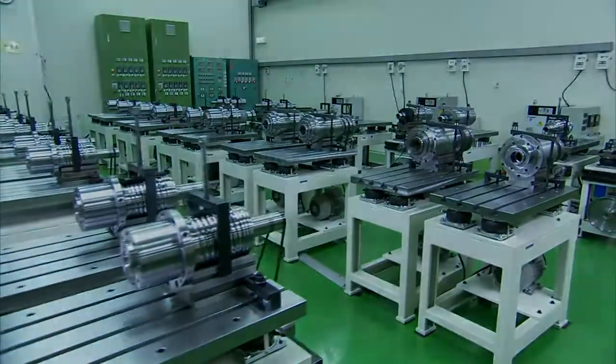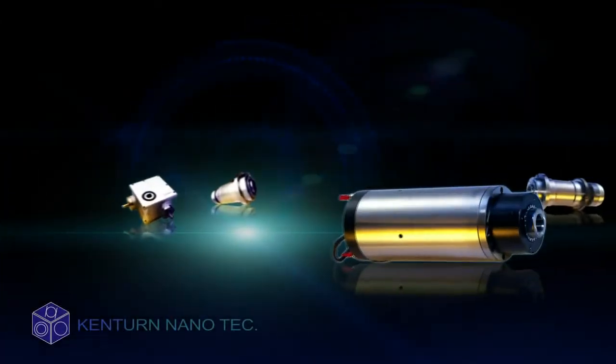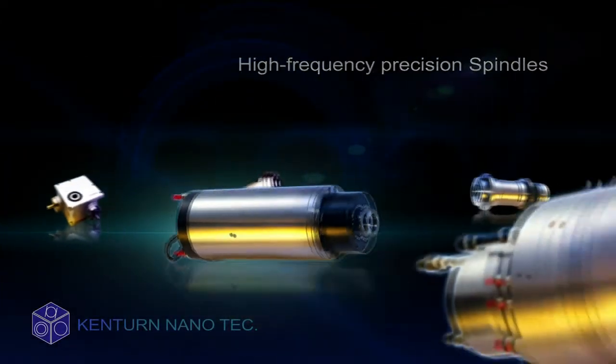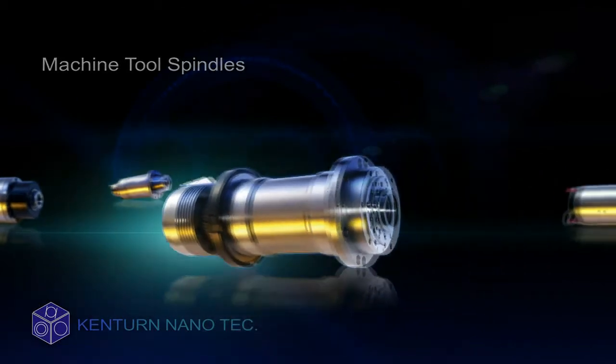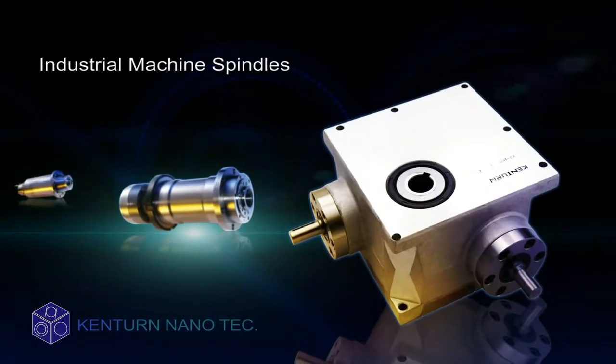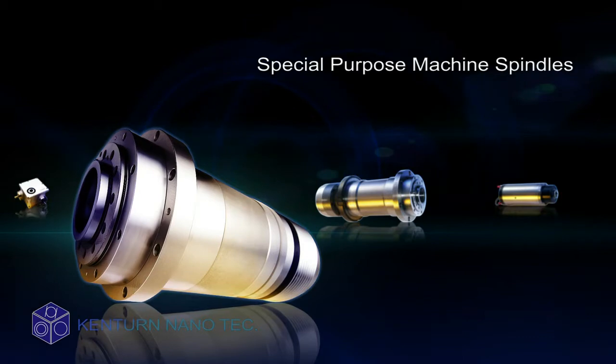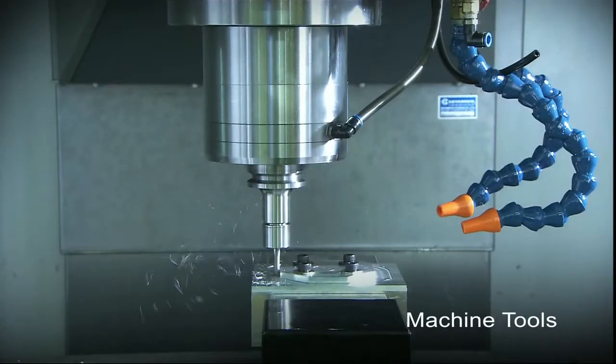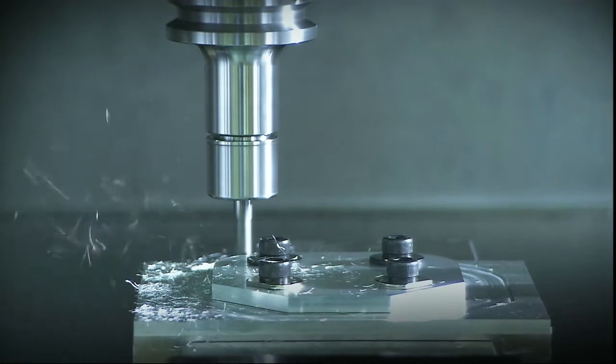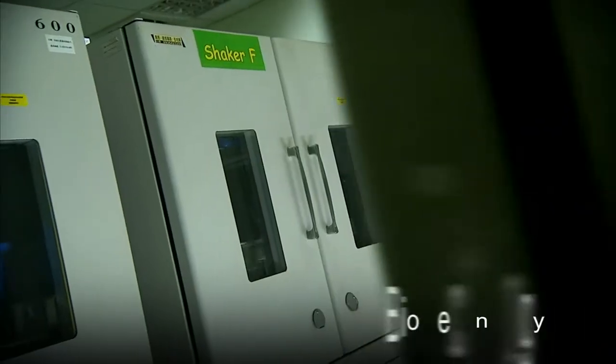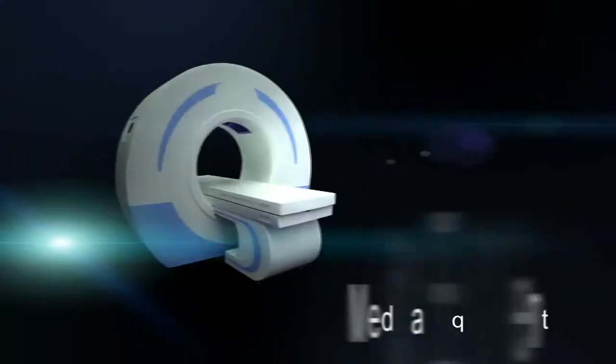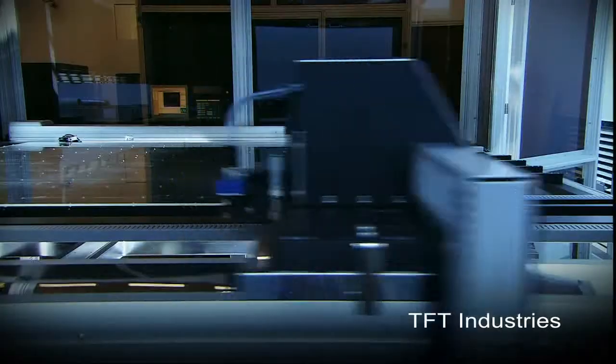At present, Kentern's key products are high-frequency spindles, built-in motorized spindles, machine tool spindles, industrial machine spindles, special purpose machine spindles, and more. With a variety of applications for machine tools, woodworking machinery, automobile industries, aerospace industries, electronic and semi-connector industries, biotechnology, medical equipment, TFT, and more.